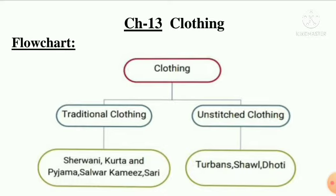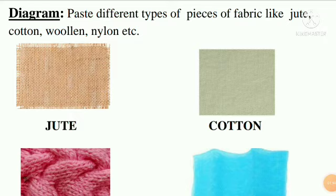Draw this flowchart in your notebook in very neat and clean handwriting, and use your scale to draw the lines. Now take a new page — we will paste pictures of fabrics in the diagram part. Write the heading 'Diagram' and write this question: paste different types of pieces of fabric like jute, cotton, woolen, and nylon.